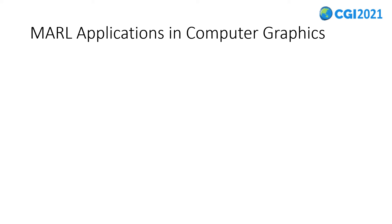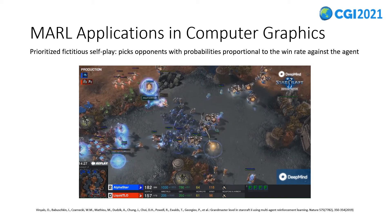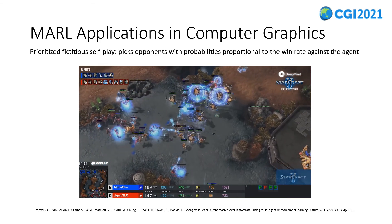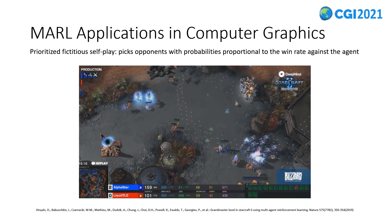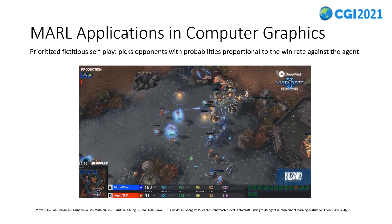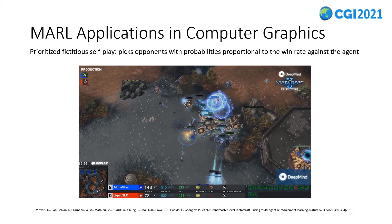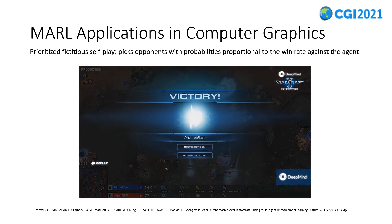Now I'll introduce some amazing applications in computer graphics with multi-agent reinforcement learning. StarCraft 2 is a sci-fi real-time strategy video game, which is a new milestone for deep reinforcement learning due to its large partially observable observation space and large action space. DeepMind's StarCraft 2 AI, AlphaStar, uses prioritized fictitious self-play, which picks opponents with probabilities proportional to the win rate against the agent, allowing the agent to compete with the most challenging opponents more frequently. DeepMind says AlphaStar reached a grandmaster level, surpassing 99.8% of human players, including some professional players.